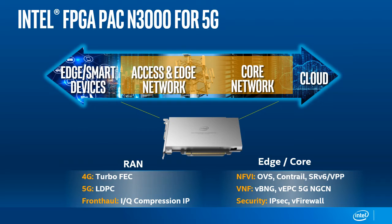The telecommunications industry has started using PAC N3000 to accelerate 5G network functions from radio access network to edge to core. On the RAN side, the PAC N3000 is used to perform forward error correction, or FEC, acceleration and front-haul function. The PAC N3000 will first be used for performing look-aside FEC acceleration, and later the same FPGA will enable inline front-haul compression. The same hardware can also be used to support different types of 5G network functions, such as 5G edge and core, where this platform is used to support NFV infrastructure, or NFVI, virtual network function, or VNF, data plane and security applications.